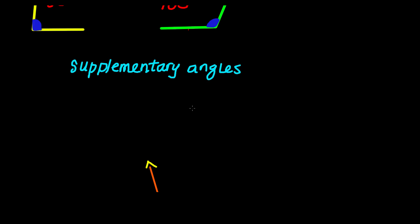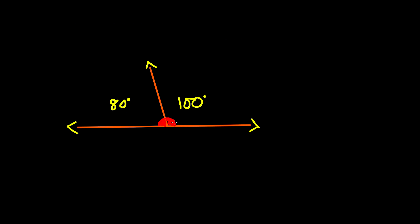Here I have modeled that situation. We have the 80 degree angle right over here and the 100 degree angle right over here. When we add the angle measurements together, you can see it is forming a 180 degree angle. And we know from our types of angles video that a 180 degree angle is a straight angle, also known as a straight line. So as you can see it is forming a straight line or a straight angle right here.